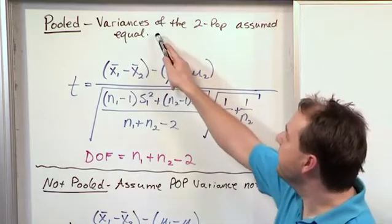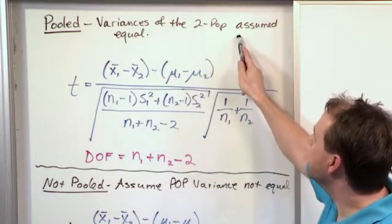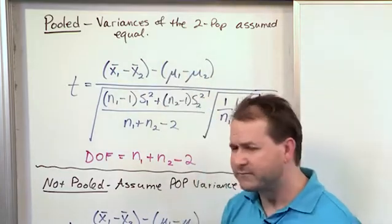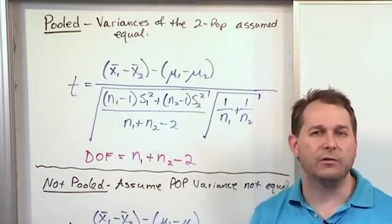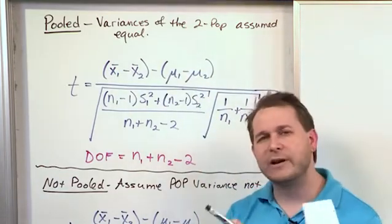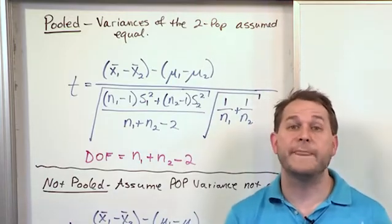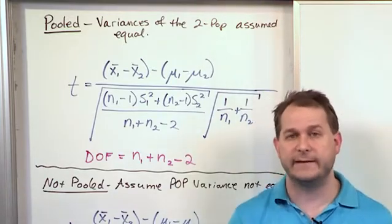So do you think we should use pooled or not pooled? Well here we're assuming the variance of the two population means are equal. Population mean in this case is how long it took them to do a project. And we're not talking about the length of time to do the project. We're talking about the variance, the spread in the data.